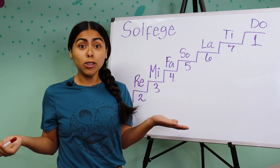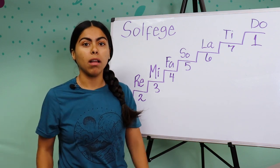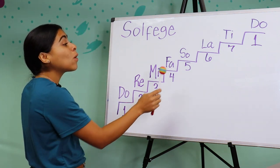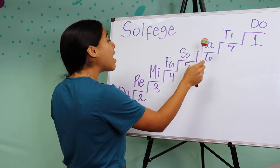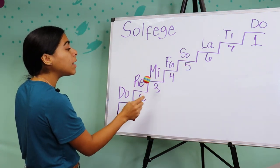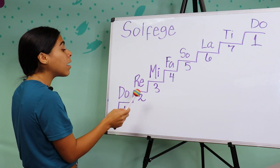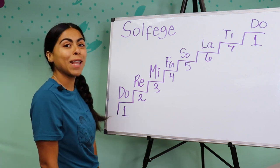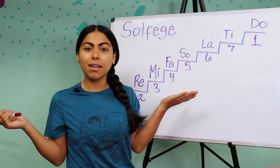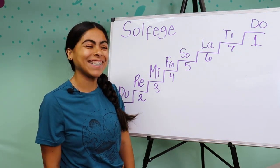So these short sounds are everywhere. Listen to this: Do, Do, Sol, Sol, La, La, Sol. Fa, Fa, Mi, Mi, Re, Re, Do. Do you recognize that song? Can you tell me what it is? It's Twinkle Twinkle Little Star. Yes!